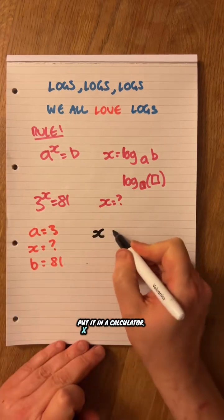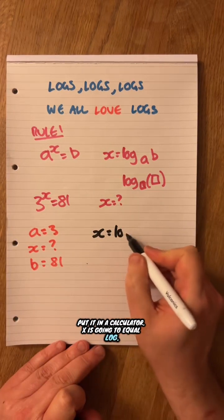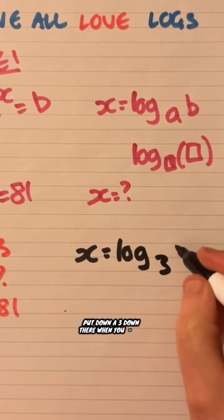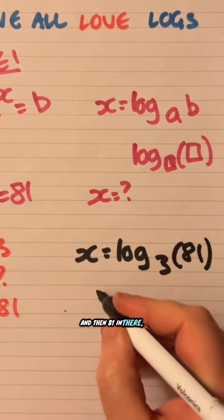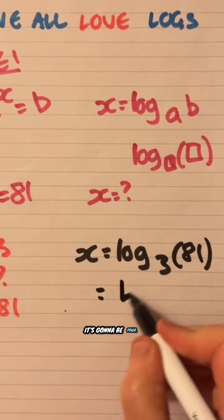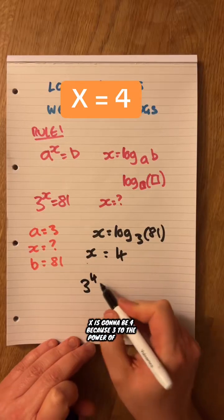Put it in the calculator. X is going to equal log, put down a 3 down there when you do on the calculator and then 81 in there. That'll give the answer. It's going to be 4. X is going to be 4 because 3 to the power of 4 is 81.